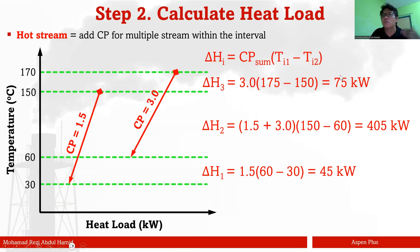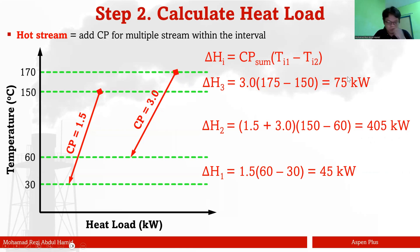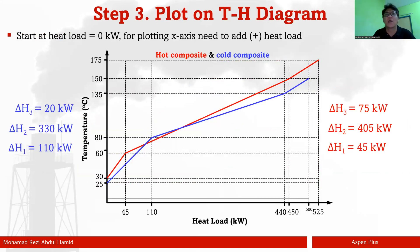For the hot stream, I also have three intervals: 170 to 150, 150 to 60, and 60 to 30. Applying the same approach, I get heat flows of 45 kW, 405 kW, and 75 kW respectively. Now that I know all temperatures and heat flows, the next step is to prepare the cold and hot composite curves, plotted with temperature on the y-axis and heat flow on the x-axis.